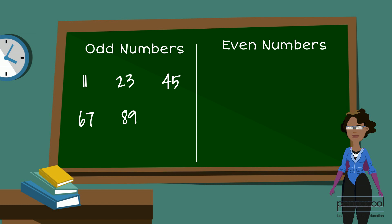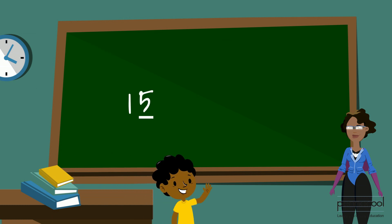So Jack, was 15 an odd or even number? Jack responded, well if 15 ends in 5 then it's an odd number. That's great Jack, well done.